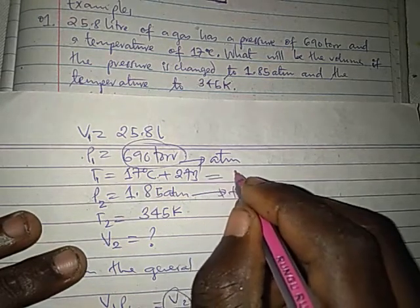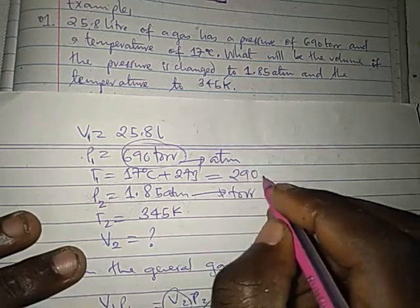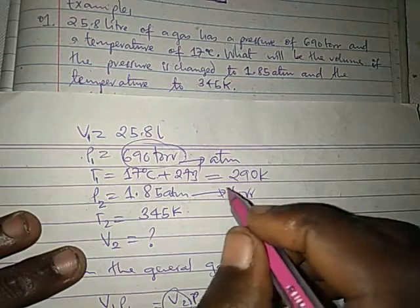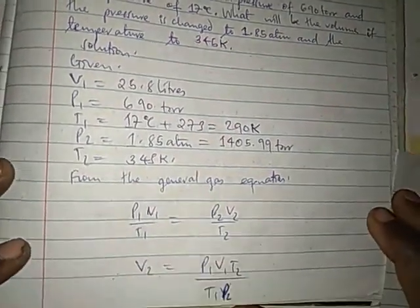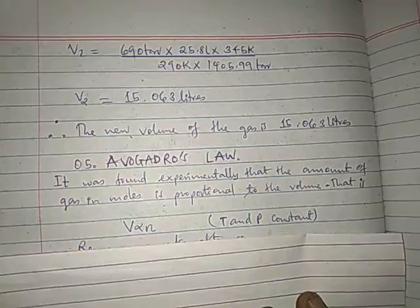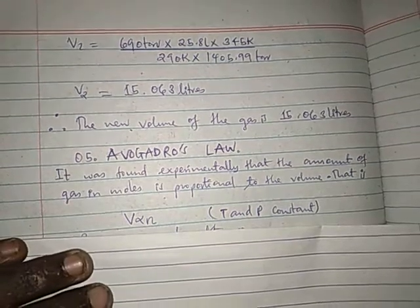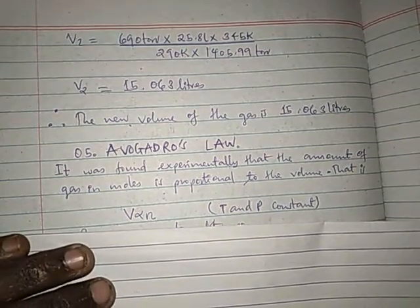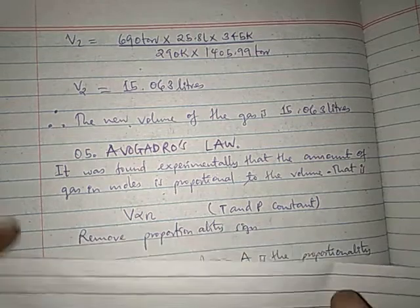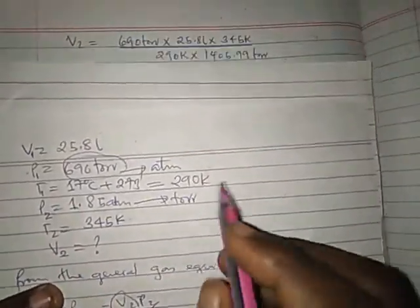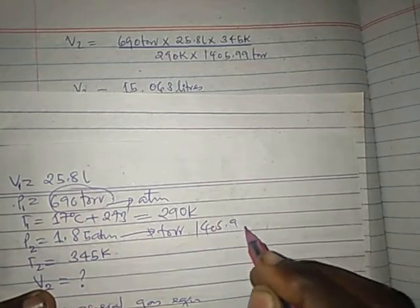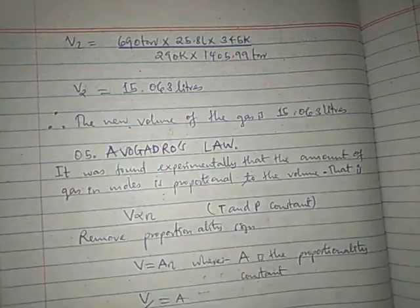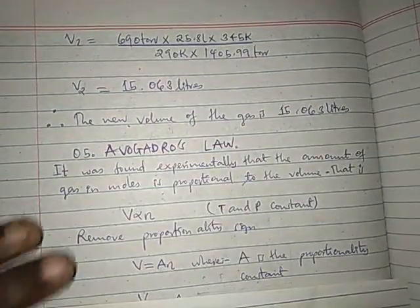That's equal to V2. Note that temperature must be in Kelvin. So even when using the general gas equation, you must convert pressure to torr and temperature to Kelvin. After converting and calculating, you will get the volume V2 equal to approximately 1.9 torr. If we calculate using a calculator you will get the final volume V2.